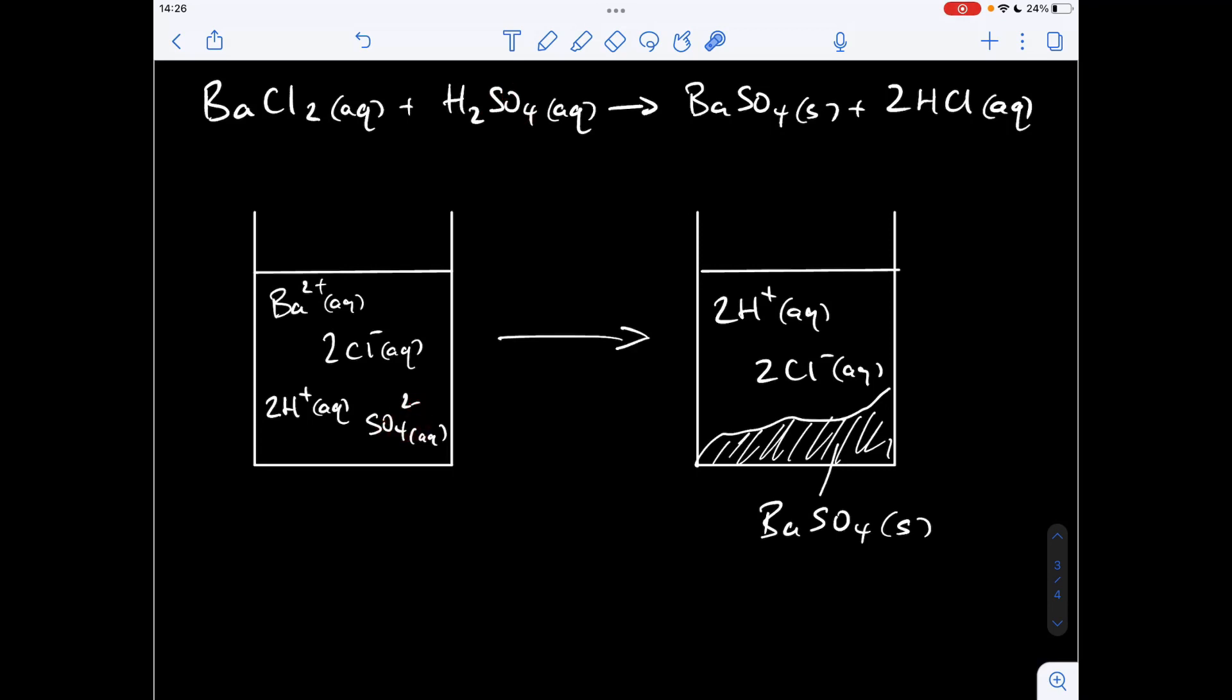Moving on to the products, we've got this solid precipitate of barium sulfate. And we've got two moles of hydrochloric acid, aqueous acid. So we show the ions. So we've got two H plus ions, aqueous, and two chloride ions, aqueous.